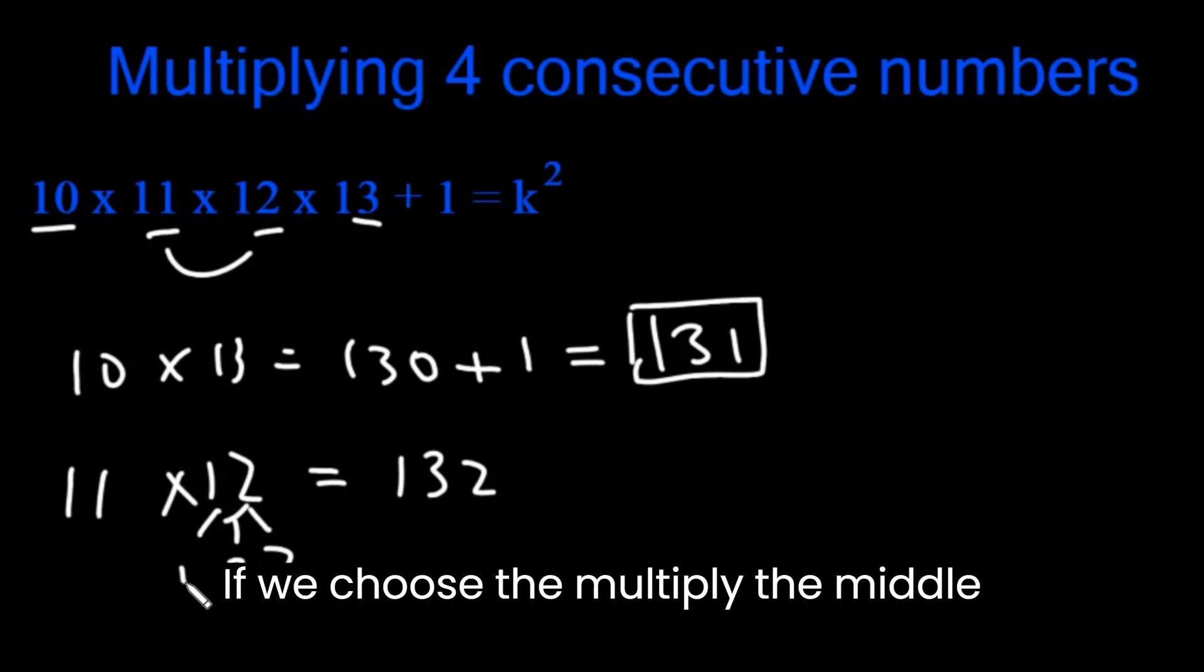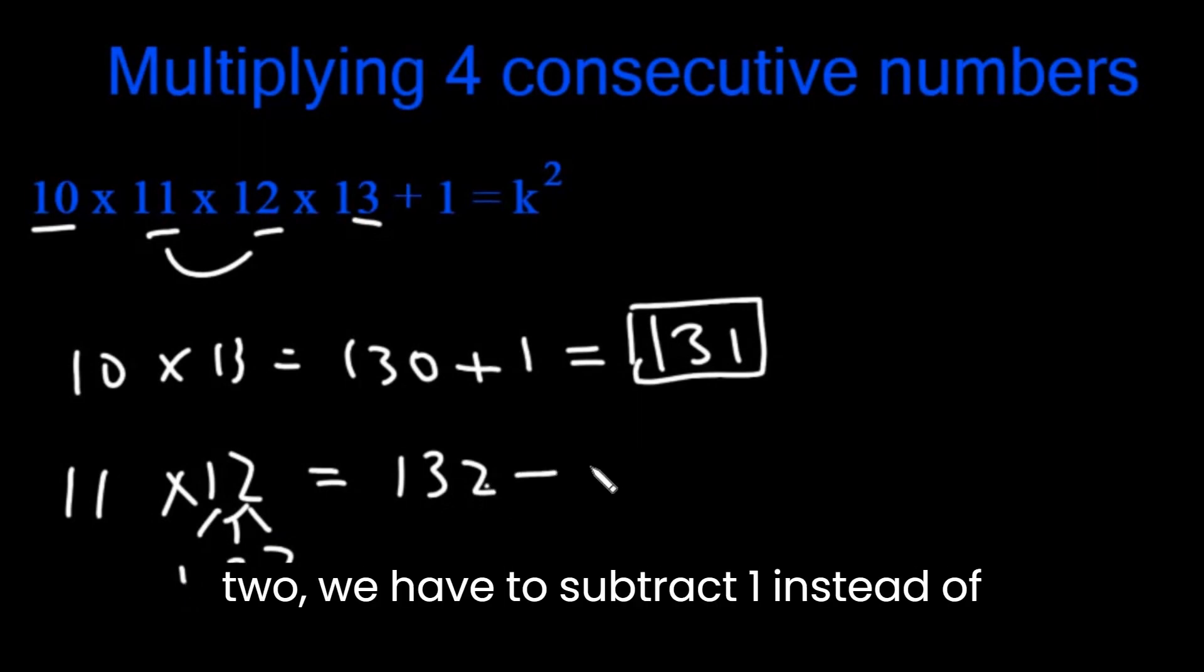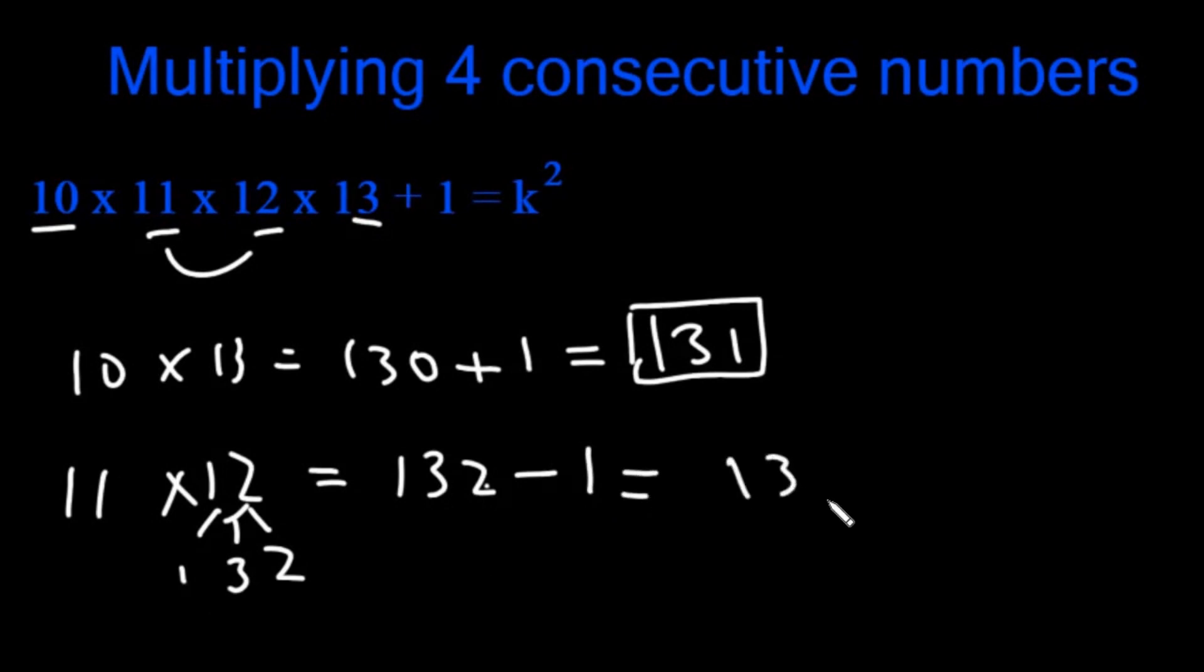If we choose to multiply the middle two, we have to subtract one instead of adding one. This is also 131. Both ways will give us the k.